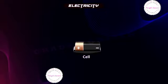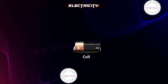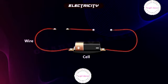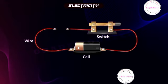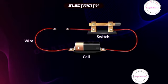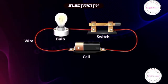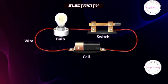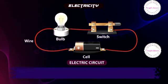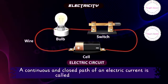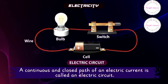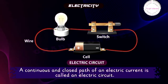This is an electric cell. This is an electric wire. This is a switch. And this is an electric bulb. This arrangement is called an electric circuit. A continuous and closed path of an electric current is called an electric circuit.